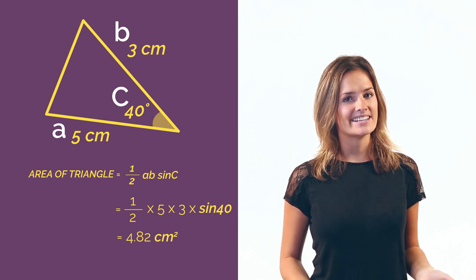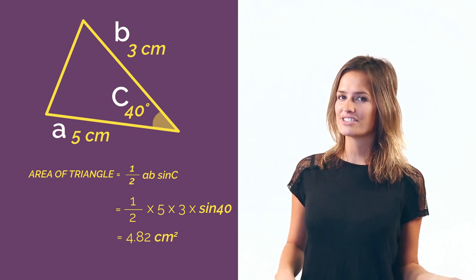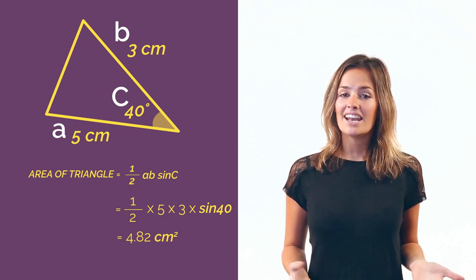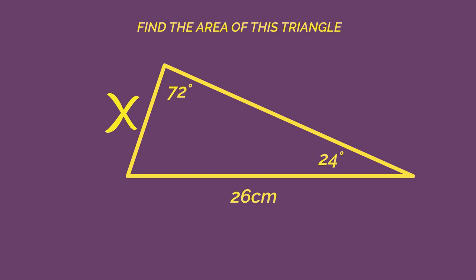Sometimes we may need to use our sine and cosine rule knowledge first before we can find the area. Like in this question, we're going to have to find side x before we can find the area.